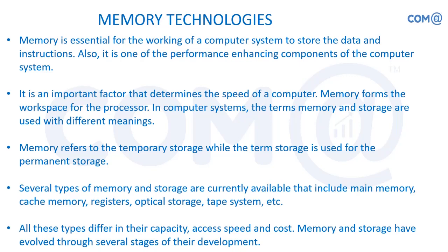Different types of memories are available — we have primary memory and secondary memory. Based on the purpose or requirement we go for different types. We also have optical storage, tape systems, and registers. Secondary storage devices include various types, but the memory we are going to see now is a primary storage device.